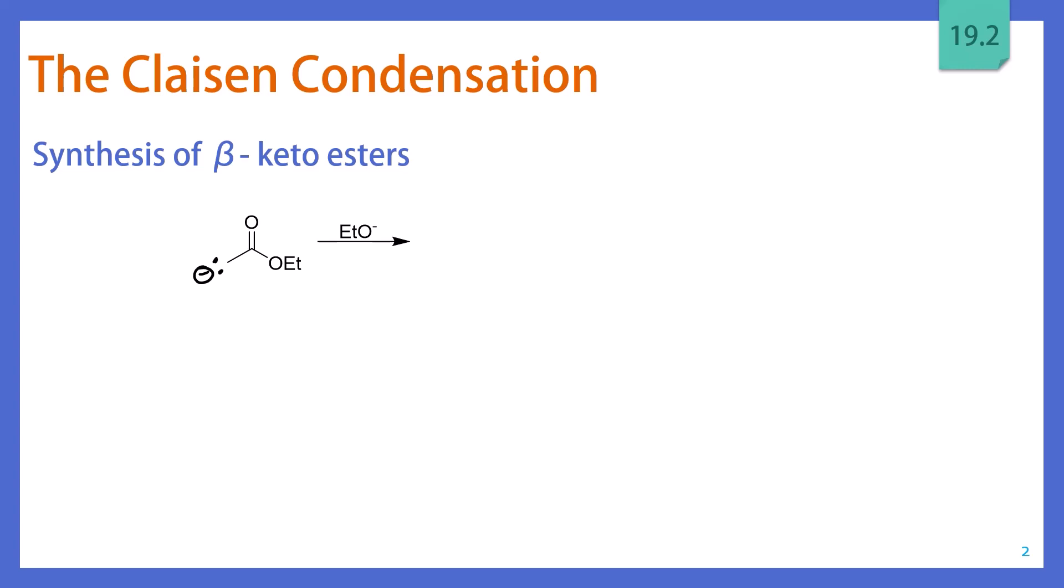Now what you probably recall from Chapter 18 is that when an enolate is produced with a weaker base, such as an alkoxide, you actually don't create that much of the enolate. You're going to have a lot more of the ester in the reaction than you will have of the enolate, which means that every time we create one of these enolates, it is actually going to want to react and it will attack the carbonyl of an ester that has not yet been deprotonated. And this gives us an intermediate there.